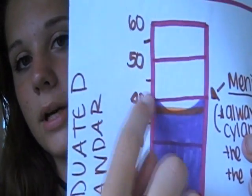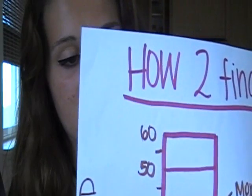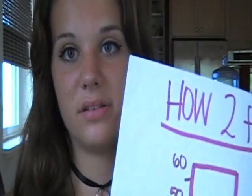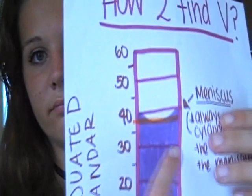In every graduated cylinder you read, there's a little curve in the water — it's called a meniscus. You always read the graduated cylinder from the meniscus, because that's where the accurate measurement is.